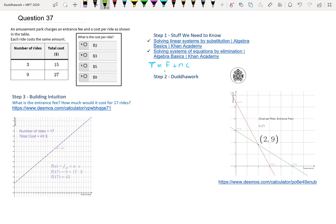For example, if you have a fee of $10 and you do three rides at $5 each, your total cost would be 10 plus 3 times 5, because you rode three times at $5 per ride. So that's $10 plus 15 is equal to $25. That's your total cost. That's how much you pay for your whole day at the amusement park. And then we have another row in the table, which says the person did nine rides and their total cost was $27.